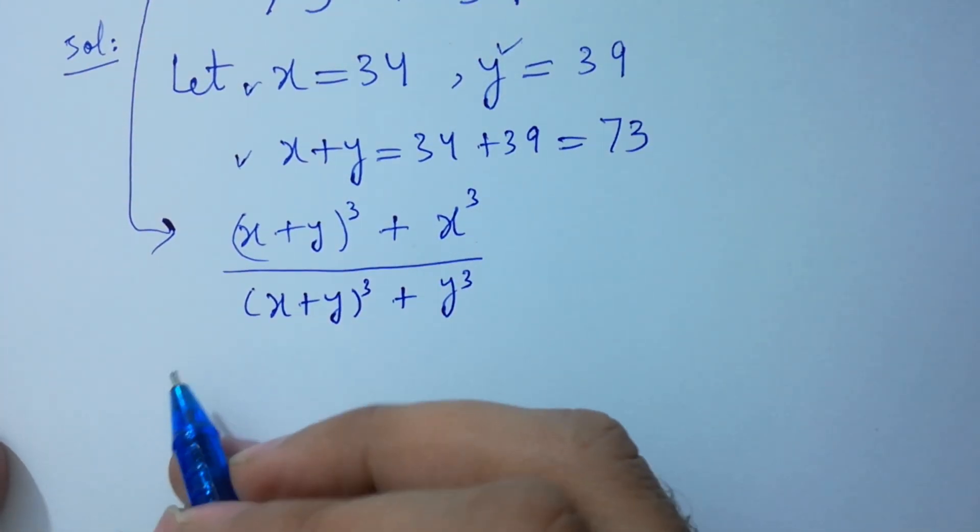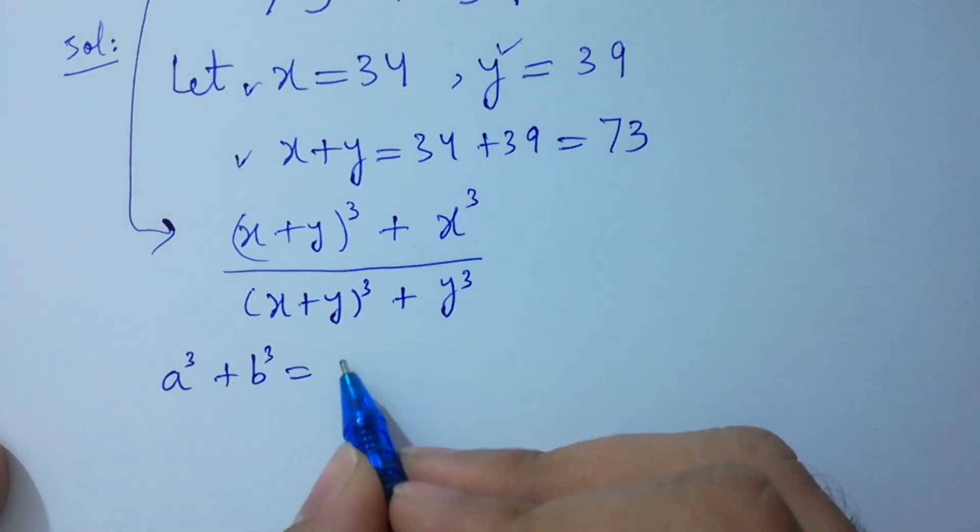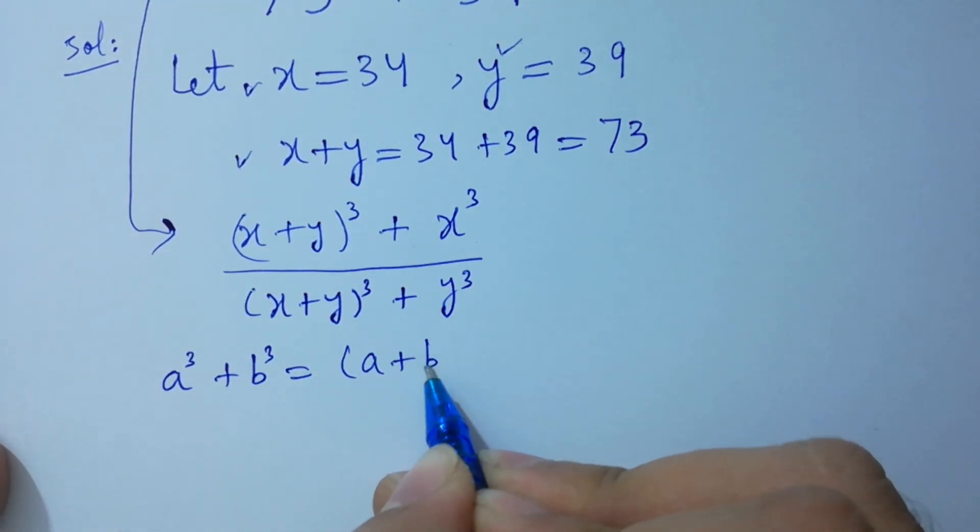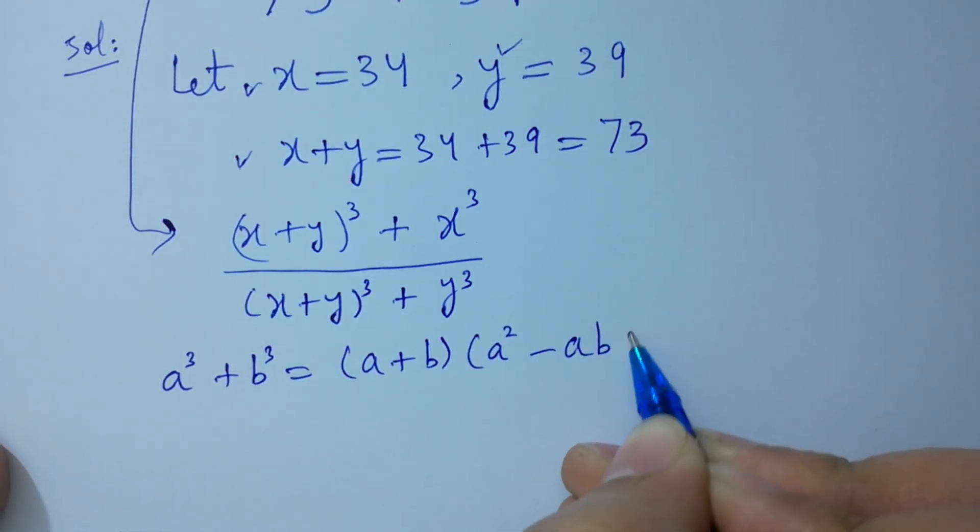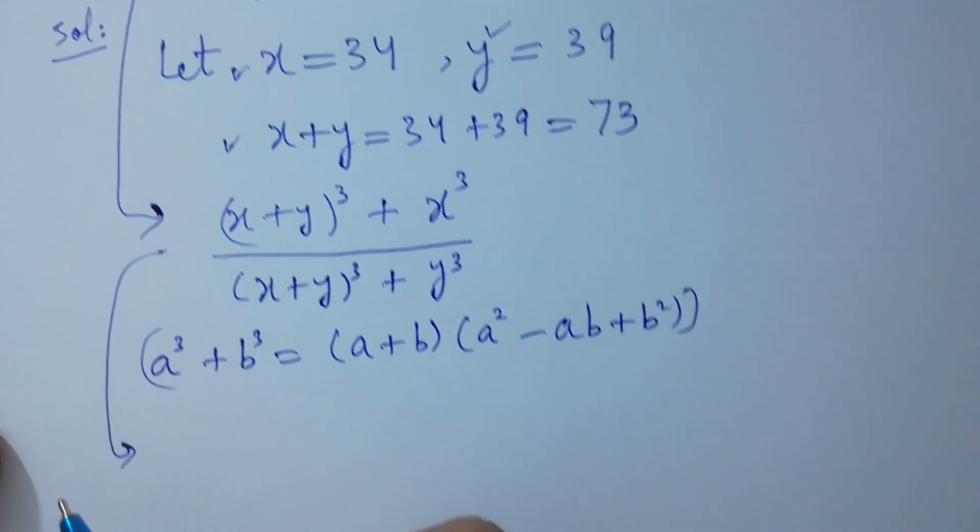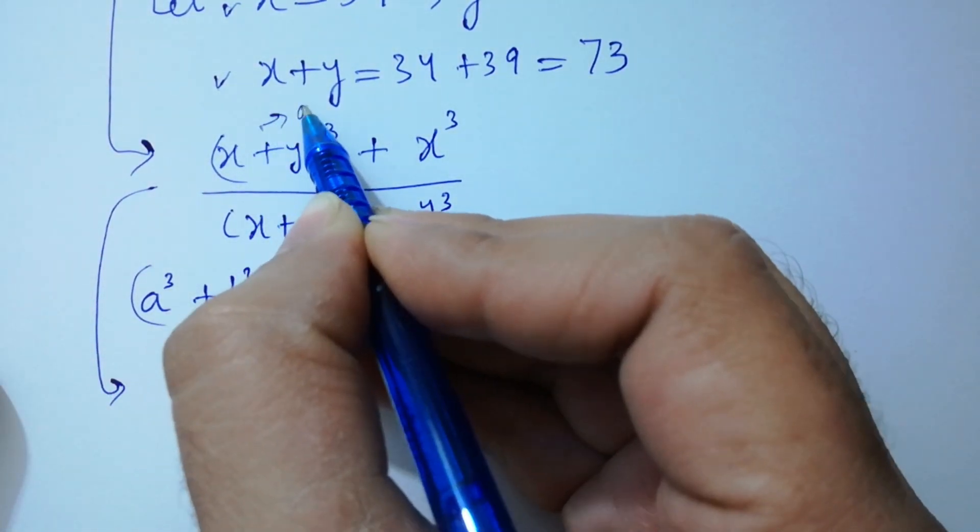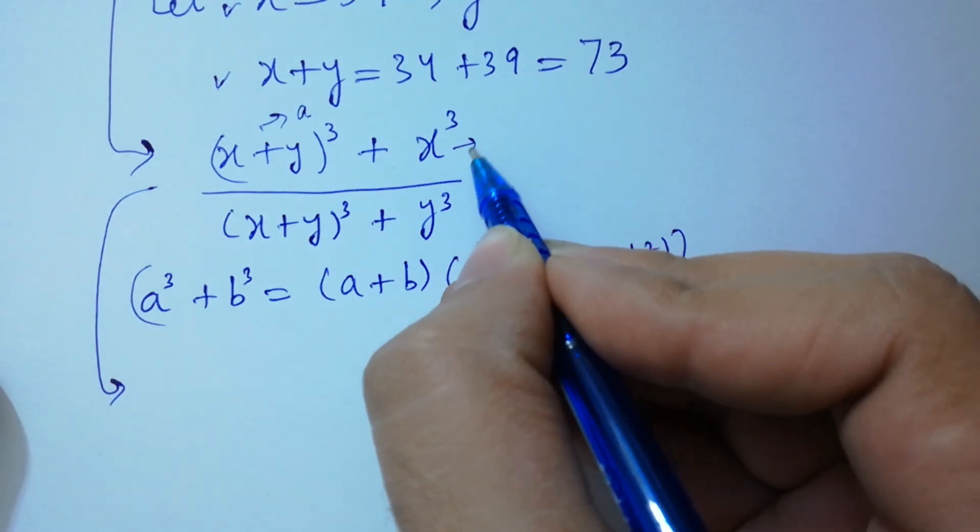As we know that the formula a cube plus b cube equals a plus b, times a squared minus ab plus b squared.